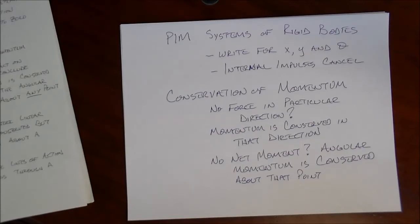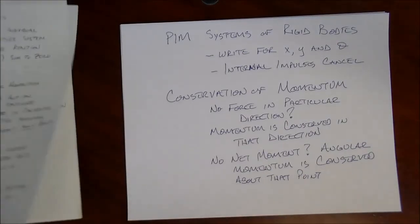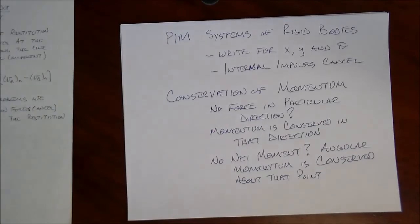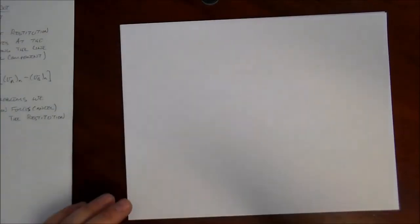So sometimes it's convenient to pick a particular point, for example, if a rigid body is pinned in a particular place, a bar pinned at one end and rotating, the pin point is probably a good place to sum moments. And you may have the case where there's zero net moment, which means angular momentum will be conserved. So sometimes that's a convenient thing to keep in mind for impulse and momentum type problems.